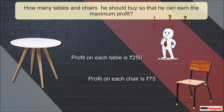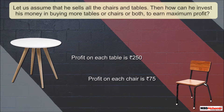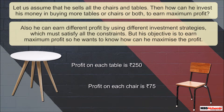He wants to know how many tables and chairs he should buy so that he can earn the maximum profit. Let us assume that he sells all the chairs and tables. He can invest his money in buying more tables or chairs or both to earn maximum profit. He can earn different profits using different investment strategies, which must satisfy all the constraints, but his objective is to earn maximum profit — so he wants to know how to maximize it.